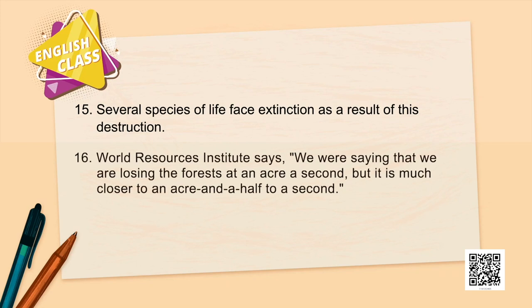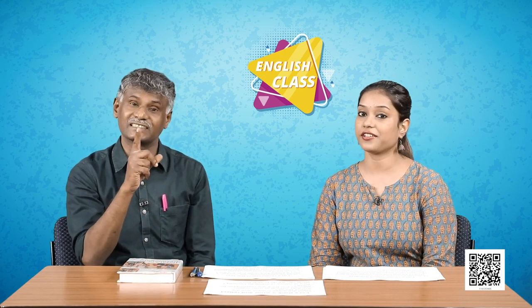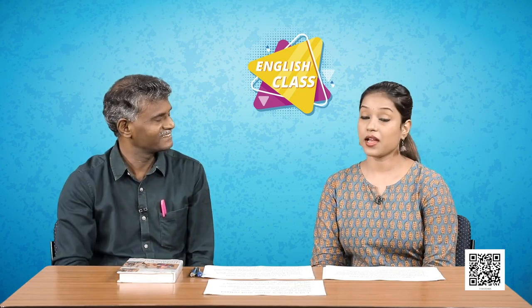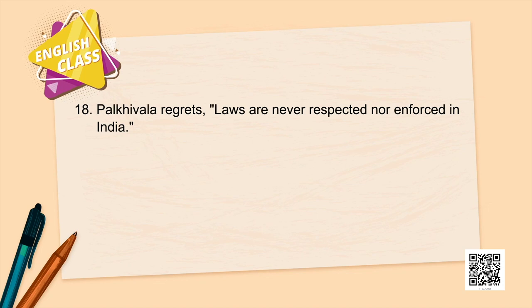Palkhivala is not pessimistic — there is a way to protect the environment. The World Resources Institute says we were losing forest at an acre per second, but it is actually closer to an acre and a half per second. Every second we are losing one and a half acres of forest. Article 48 of the Constitution of India provides that the state shall endeavour to protect and improve the environment and to safeguard the forests and wildlife of the country.